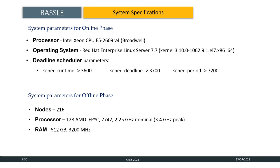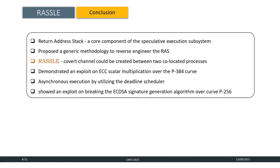To conclude, in this presentation, we discussed about Return Address Stack, a core component of the speculative execution subsystem. We proposed a generic methodology to reverse engineer the RAS for undocumented processors. We proposed a novel attack RASL where a covert channel could be created between two co-located processes. Using RASL, we demonstrated an exploit on ECC scalar multiplication over the P384 curve. We demonstrated asynchronous execution by utilizing the deadline scheduler and finally we showed an exploit on breaking the ECDSA signature generation algorithm over curve P256. Thank you for your attention.